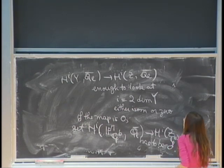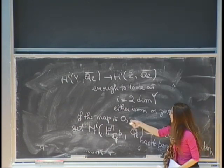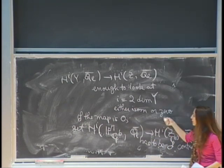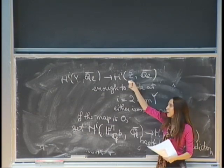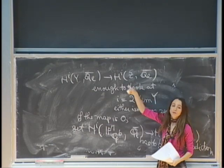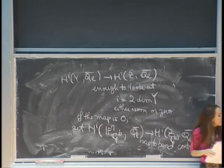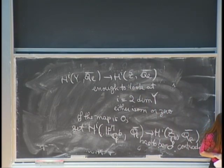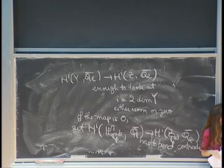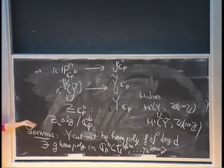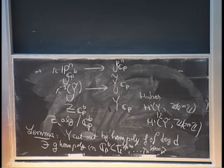So the map in top degree must be an isomorphism. Using the fact that it's compatible with cup product and Poincaré duality, you prove that H^i(Y) is a direct summand of H^i(Z), and therefore satisfies the weight monodromy conjecture. That's all.